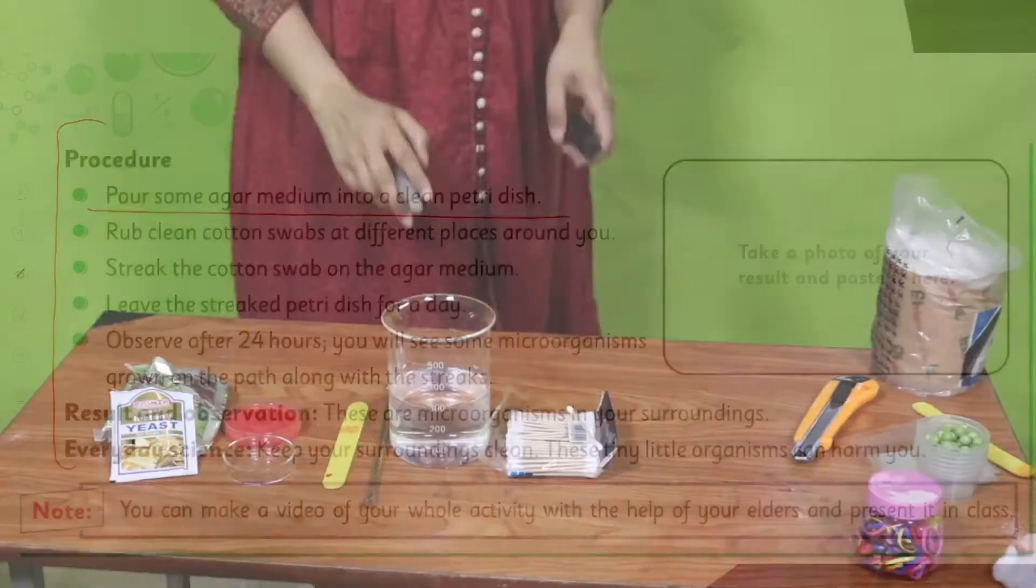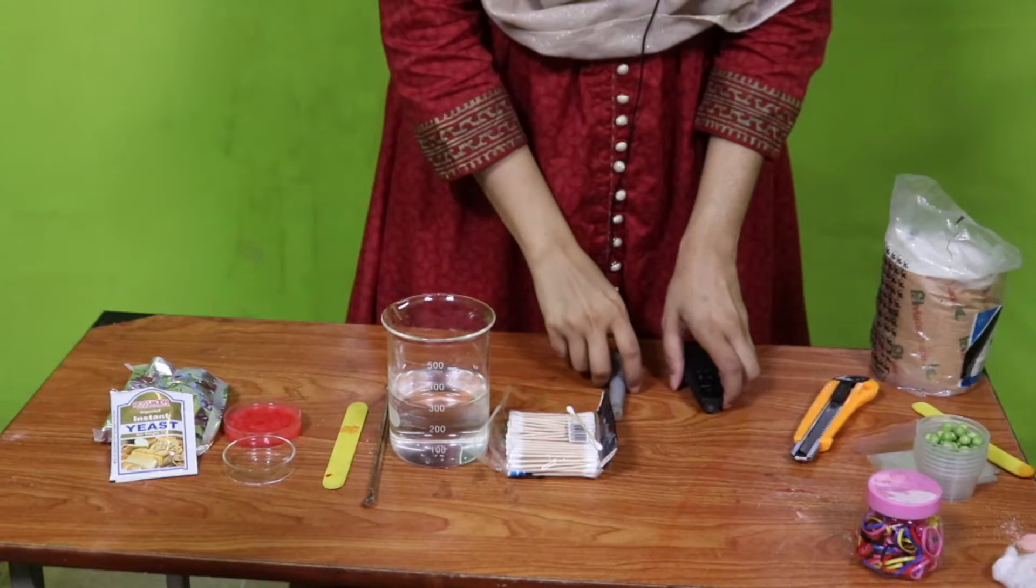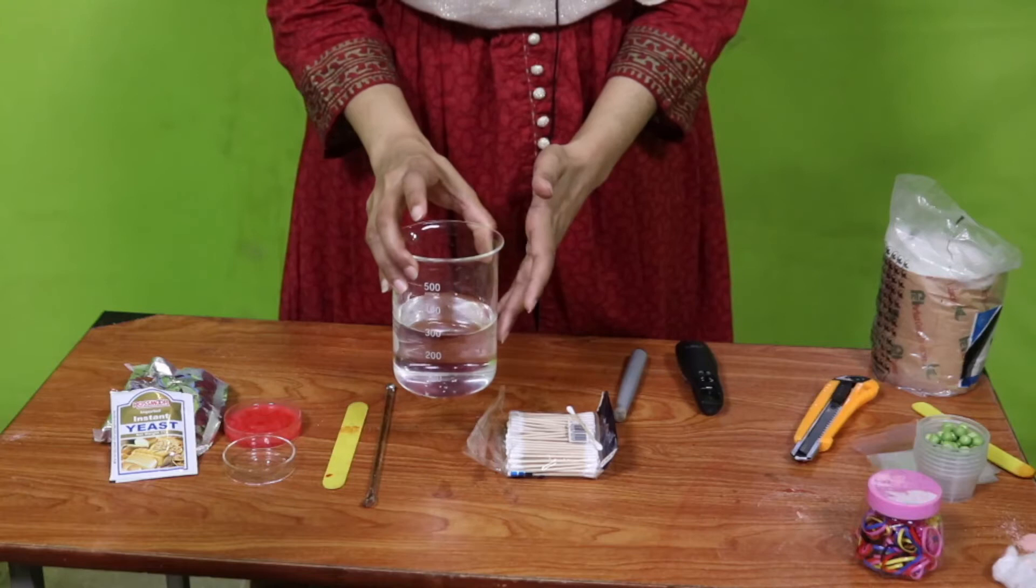How we will prepare the agar medium? First of all, we will take this water - it is warm by the way, this is 300 ml water, I have measured it. What I will do is I will add 6.65 grams of yeast in it.